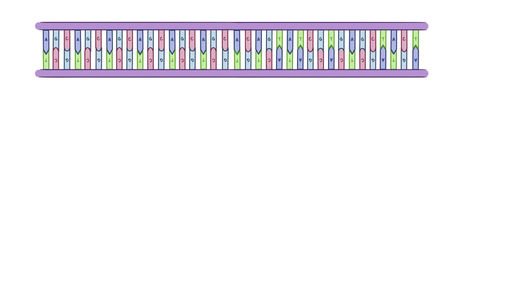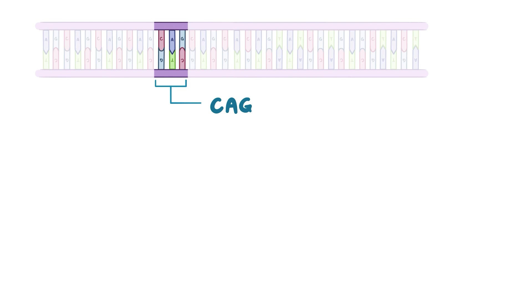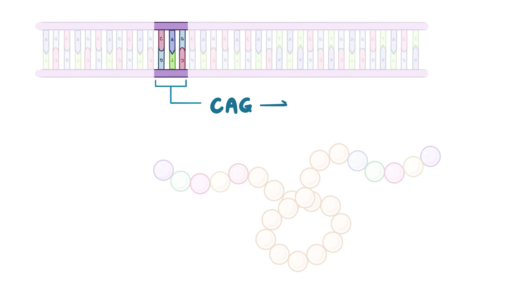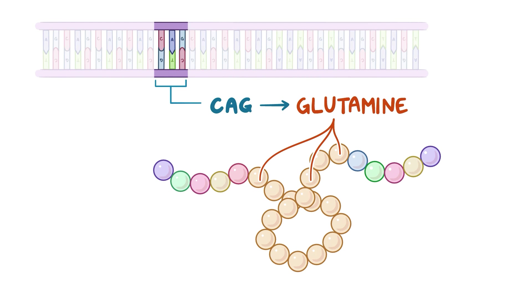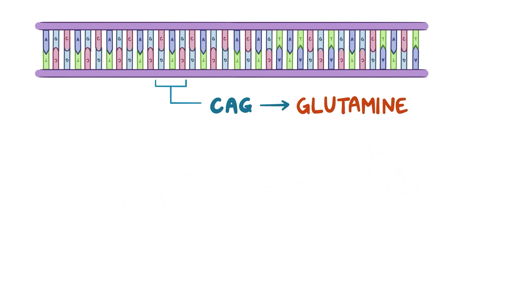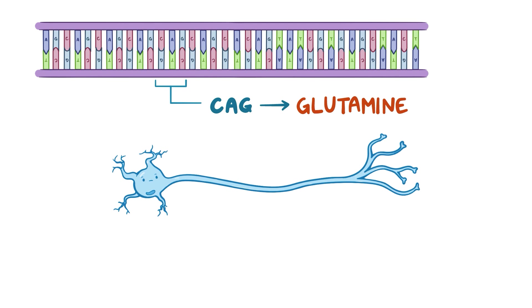In some cases, the involved gene contains a triplet repeat, where the nucleotides C, A, and G are repeated multiple times in a row. Since CAG codes for the amino acid glutamine, the encoded protein will have multiple extra glutamines in a row. The specific way in which extra glutamines cause the disease's symptoms isn't fully understood, but the abnormal protein seems to aggregate within the neurons of the cerebellum and the spinal cord, causing them to die.